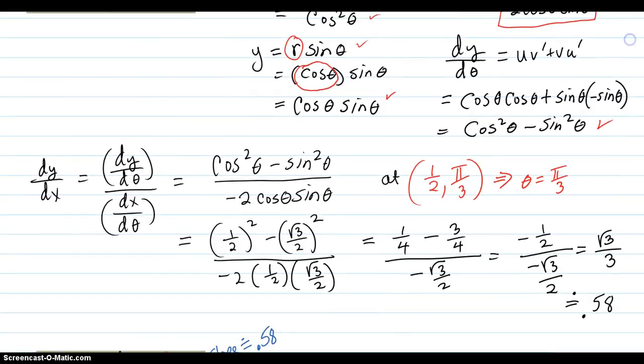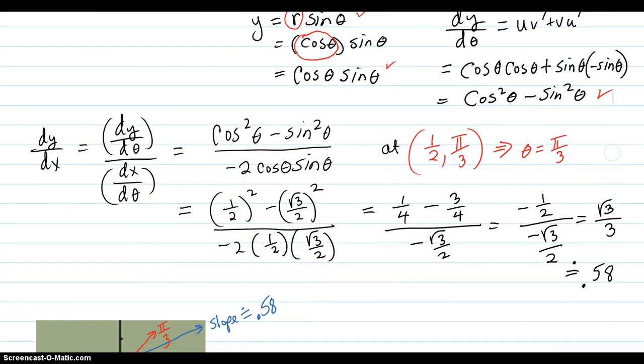Then come over to here using the formula. dy/dθ is up here, dx/dθ is down here. And we're supposed to be at the point. Remember the angle was pi over three. We're supposed to be at this point.